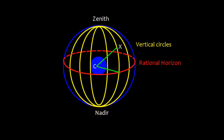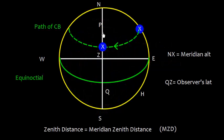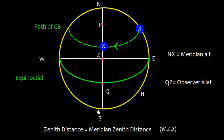This is the rational horizon diagram. This is the path of a celestial body, and when it comes to the observer's meridian — here is the pole, here is the observer, and this is the equinoctial, which is the projection of the equator on the celestial sphere. This is the rational horizon: north, east, south, west. N to X is the meridian altitude, and X to Z is the zenith distance, which we call the meridian zenith distance — that is the zenith distance of the celestial body when passing through the observer's meridian.